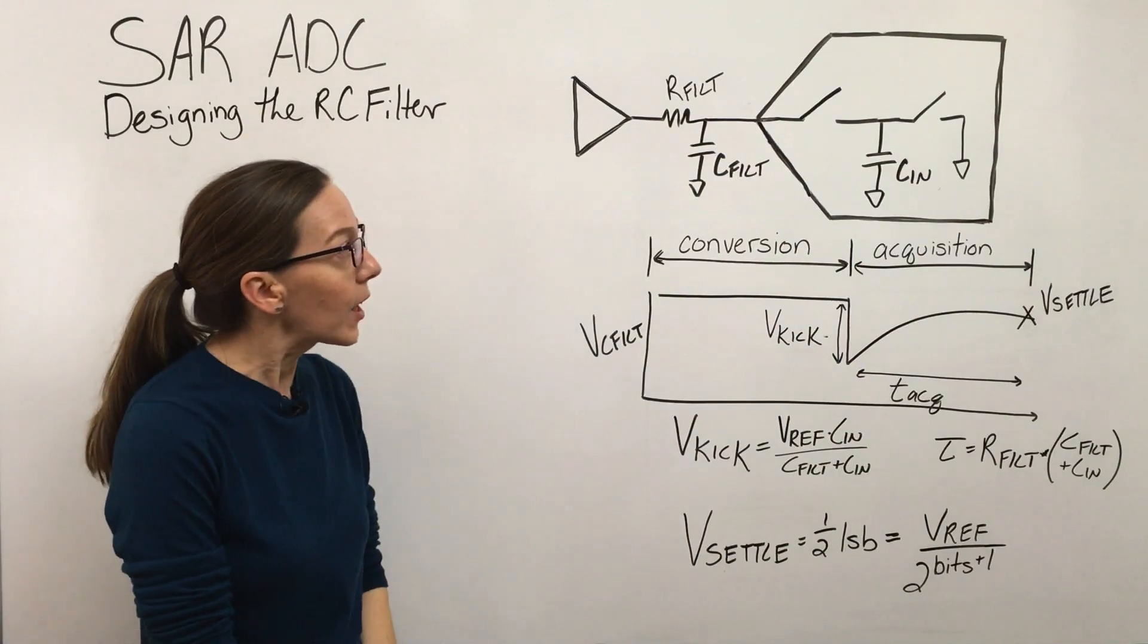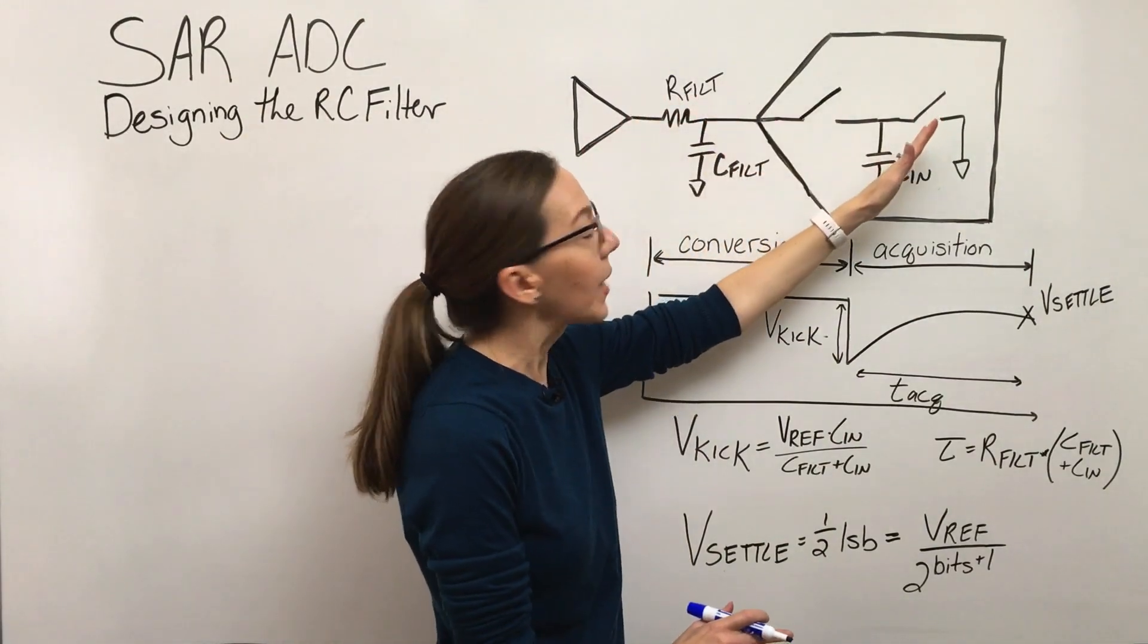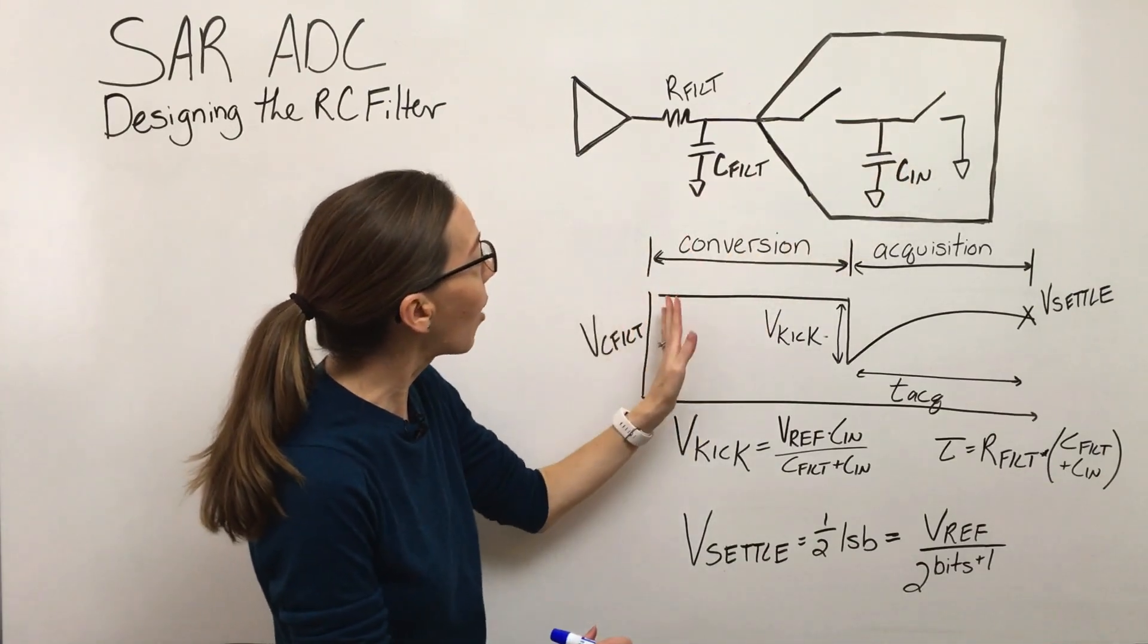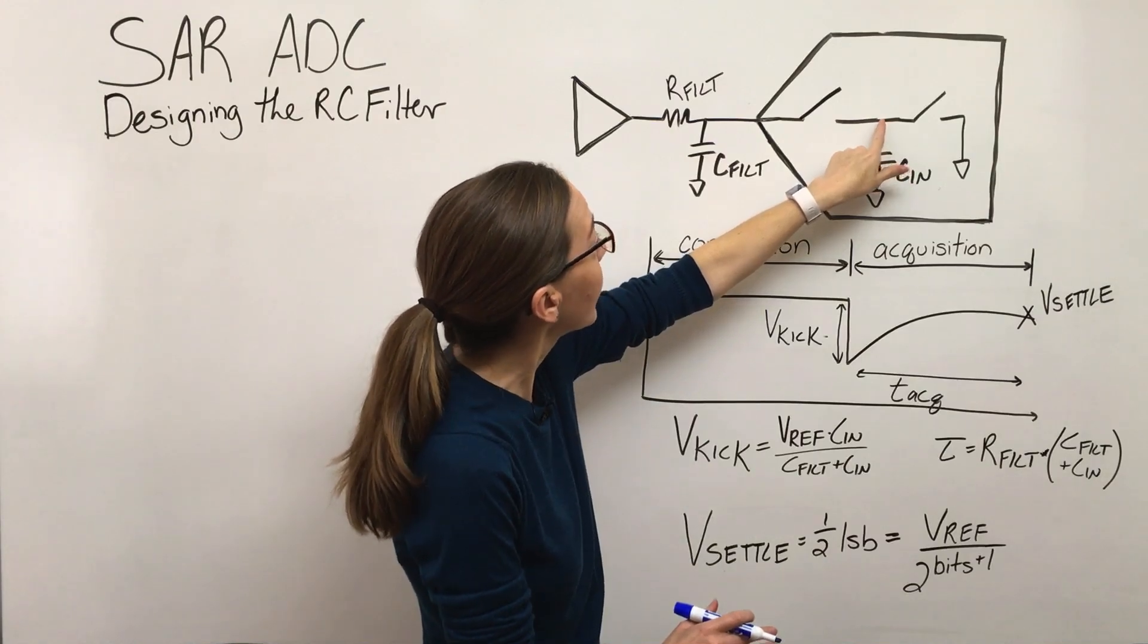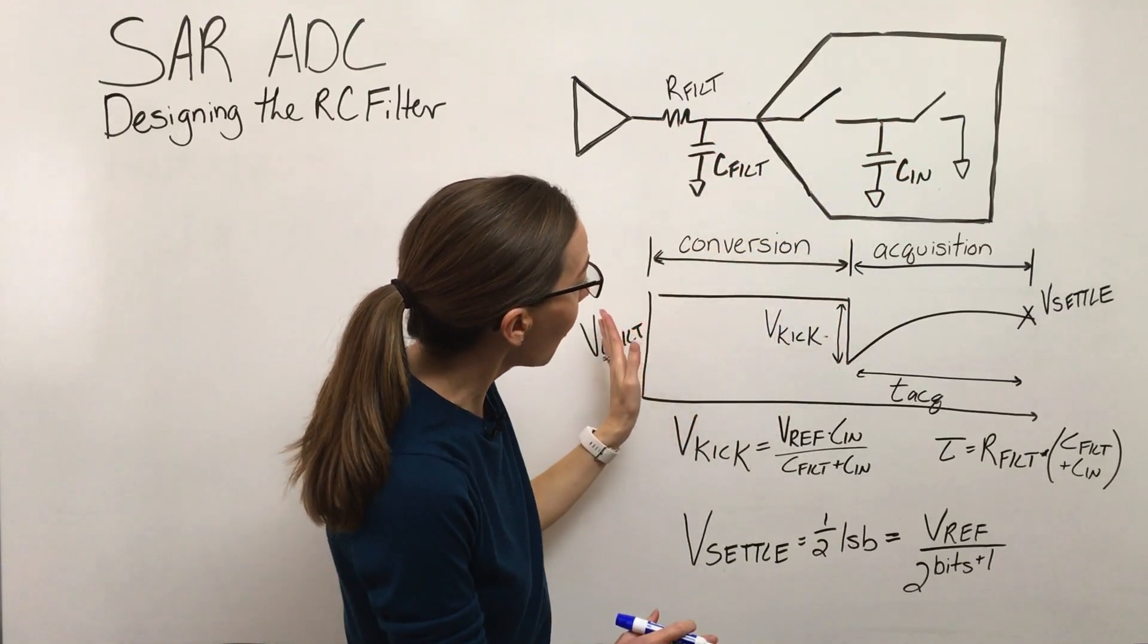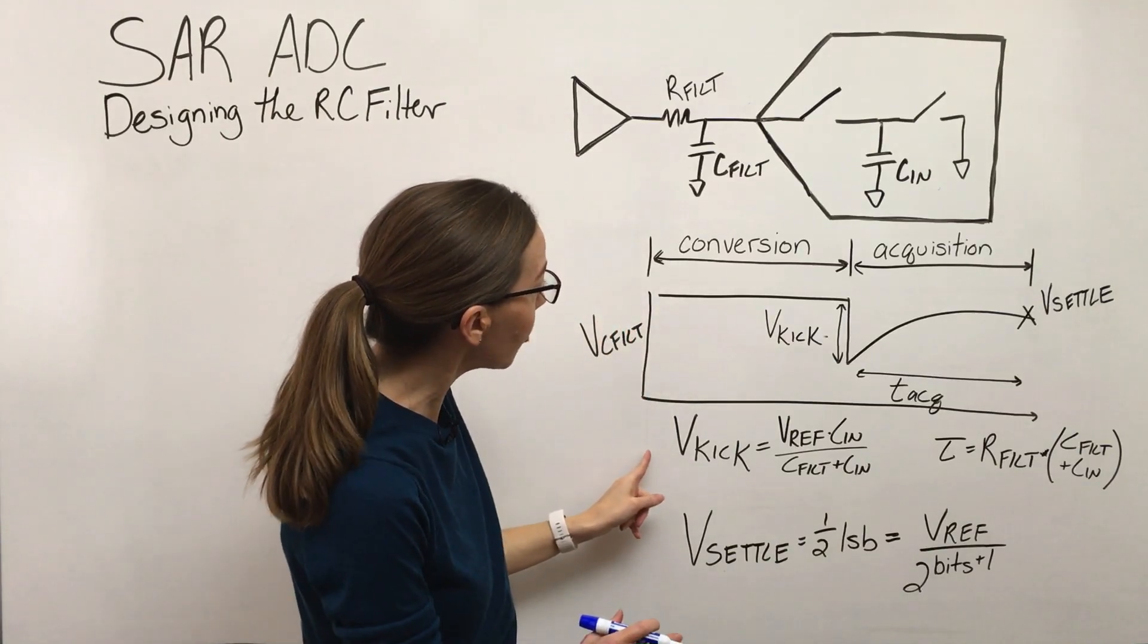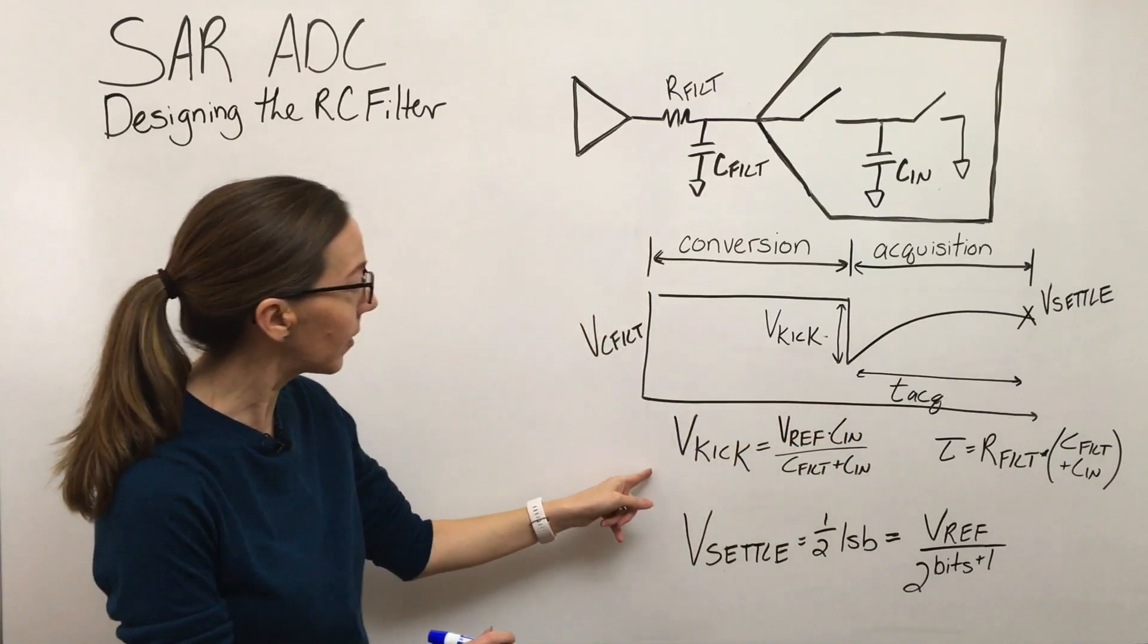In previous videos, we've gone through understanding how this model was built, how it works, and how the charge or the lack of charge at this node is going to cause a kickback at the input. We've come up with the equations for what this voltage drop is, which I'm calling VKick here.